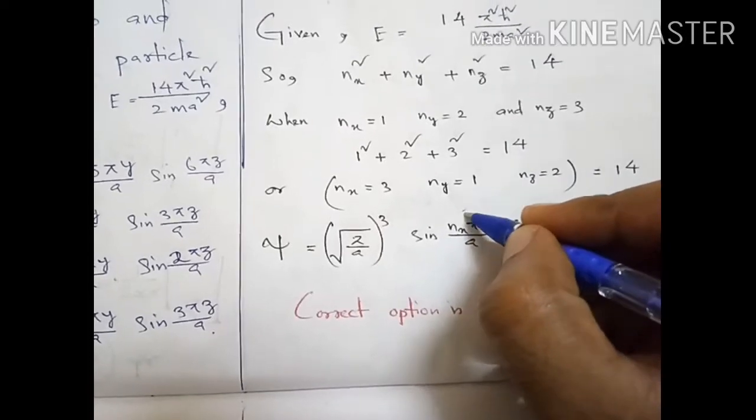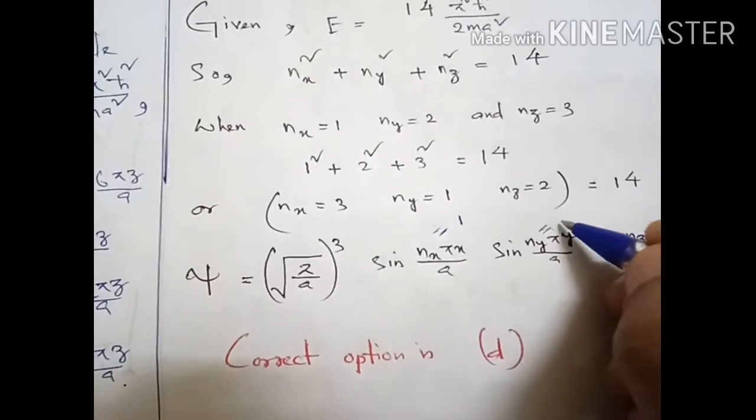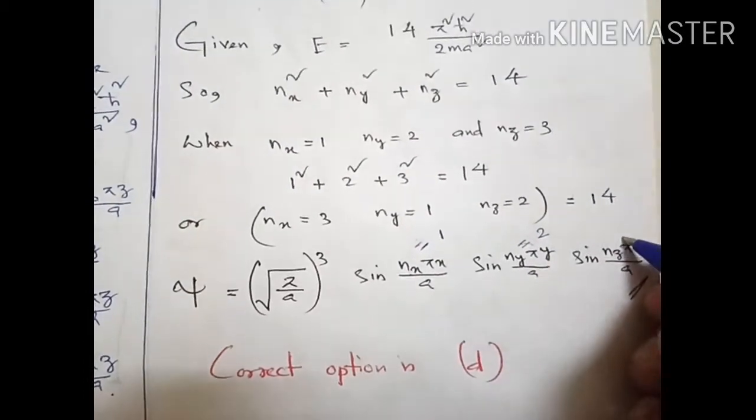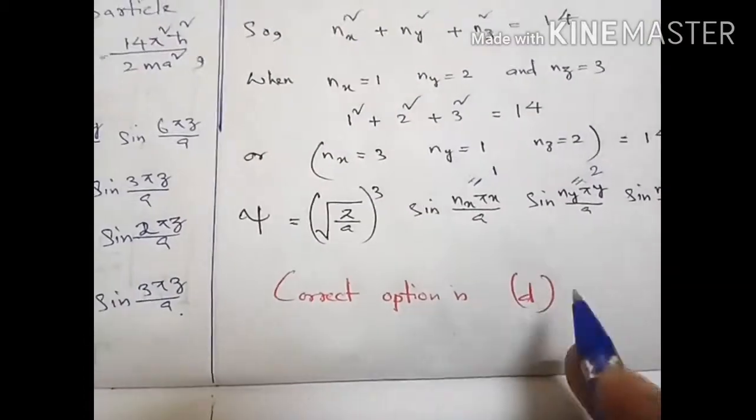In place of nx it will be 1, and in place of ny it will be 2, and nz in place of this will be 3. So our right option is D.